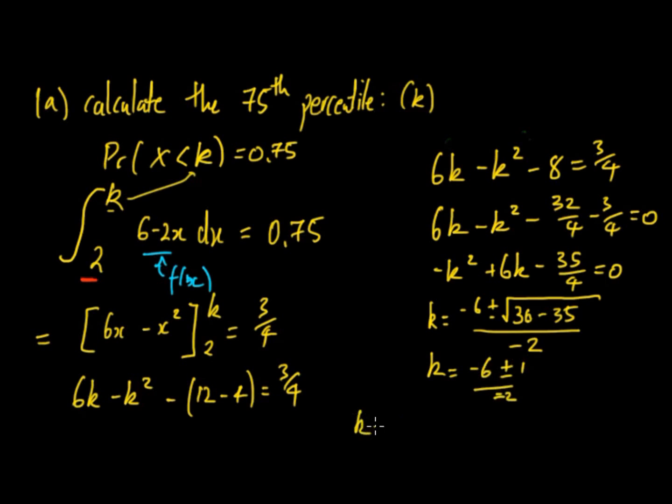So that means k is equal to 3.5 or 2.5. Now if you remember the actual function, f(x) was equal to 6 minus 2x between the domain of 2 and 3,